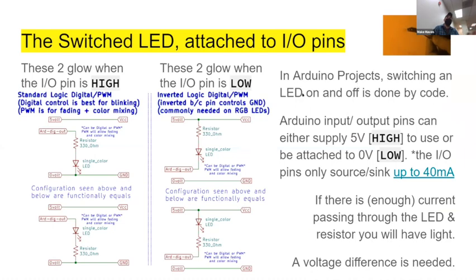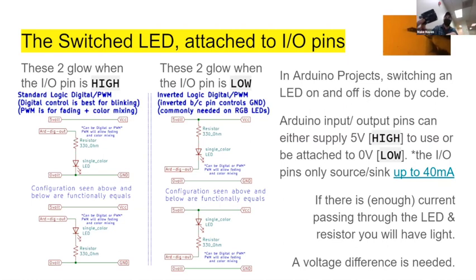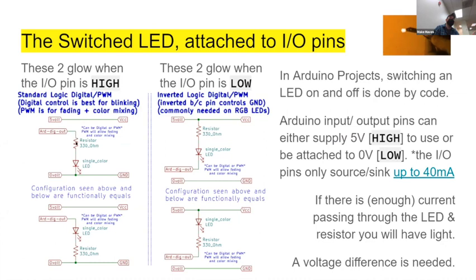Most of the time we want more interesting things to happen with LEDs than just being on to indicate power. If you want to do a switch to LED, the idea is still pretty much the same, but you'll need to attach it to one of the Arduino's pins — those numbered pins on the side. Basically you do the same exact thing: pins go through a resistor, then the LED, back to ground.